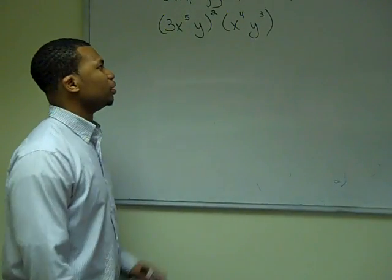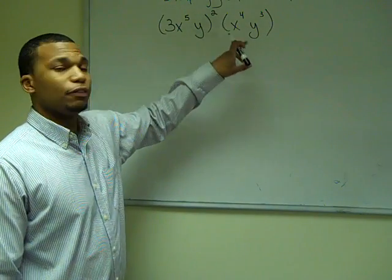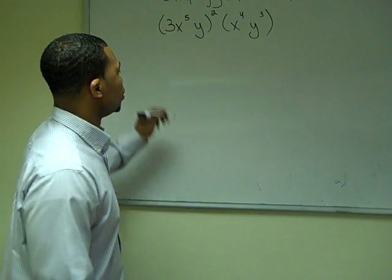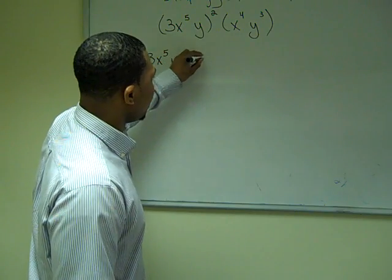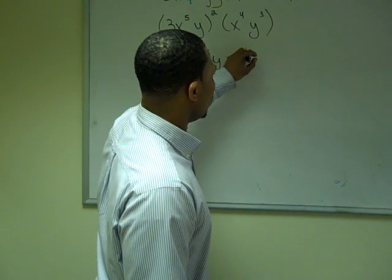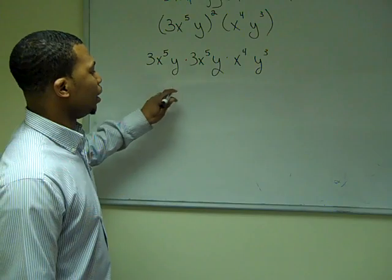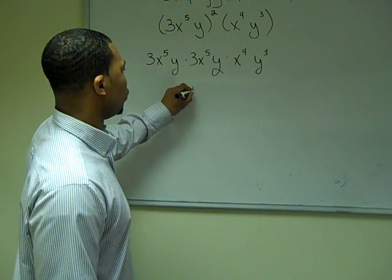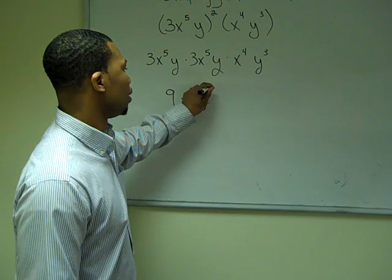In this problem, I have the base three x to the fifth y, raised to the second power, and then multiplying by x to the fourth y to the third. I first expand the exponent: three x to the fifth y, times three x to the fifth y, times x to the fourth y to the third. Three times three is nine, and I have fourteen x's in total giving x to the fourteenth, and five y's in total giving y to the fifth.